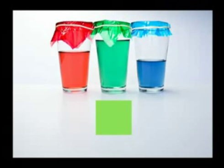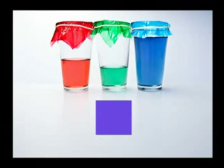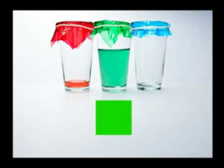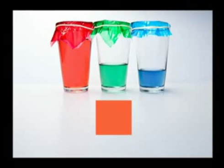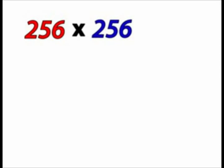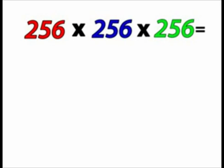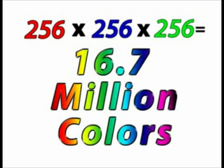In JPEG images, which use 8-bit depth, there are a total of 256 shades or intensities of light. If we were to calculate the total number of possible colors, it would be 256 red intensities times 256 blue intensities times 256 green intensities, which equals about 17 million possible colors. That's amazing.